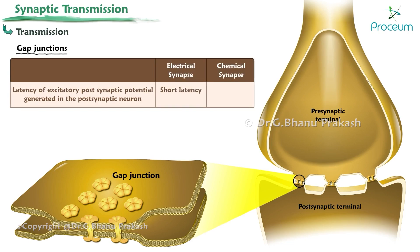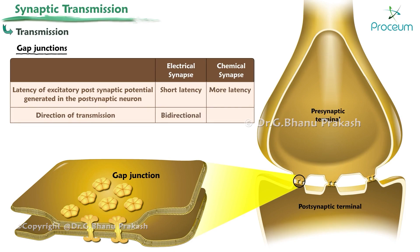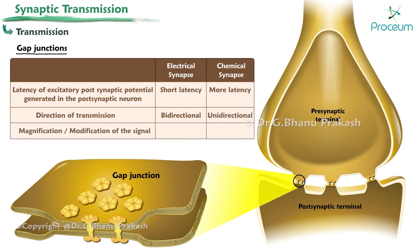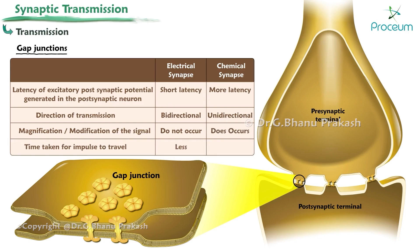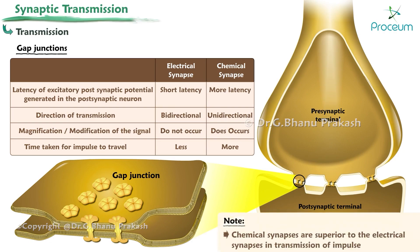Electrical synapses exhibit bidirectional transmission, whereas transmission in chemical synapses is unidirectional. Magnification and modification of the signal does not occur in electrical synapses; in contrast, magnification and modification can occur in chemical synapses. Impulses travel in a shorter time in electrical synapses, whereas it takes longer in chemical synapses. Overall, chemical synapses are considered superior to electrical synapses in the transmission of impulses.